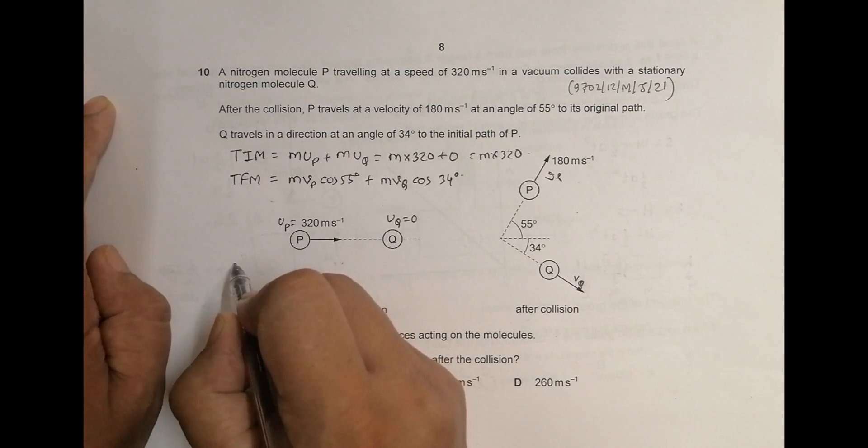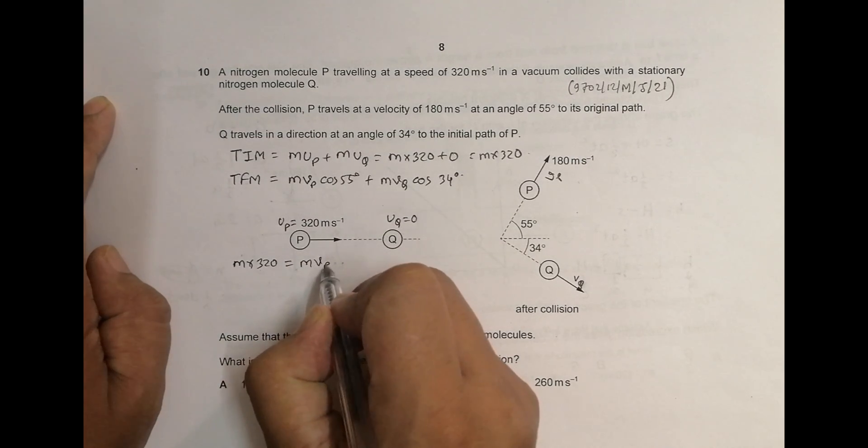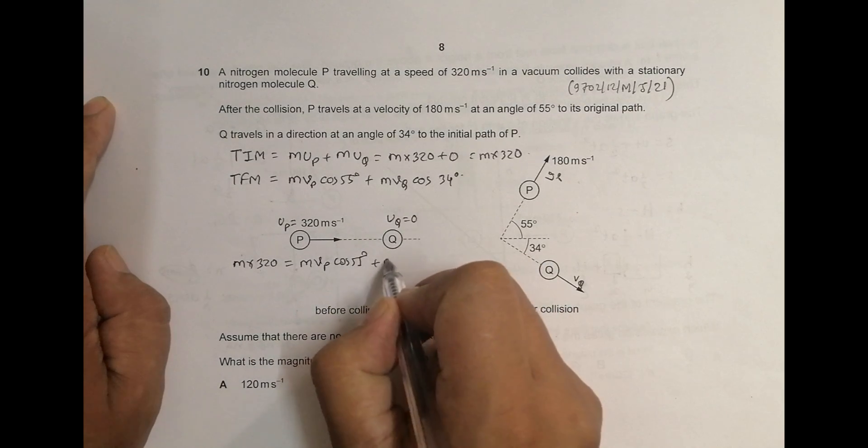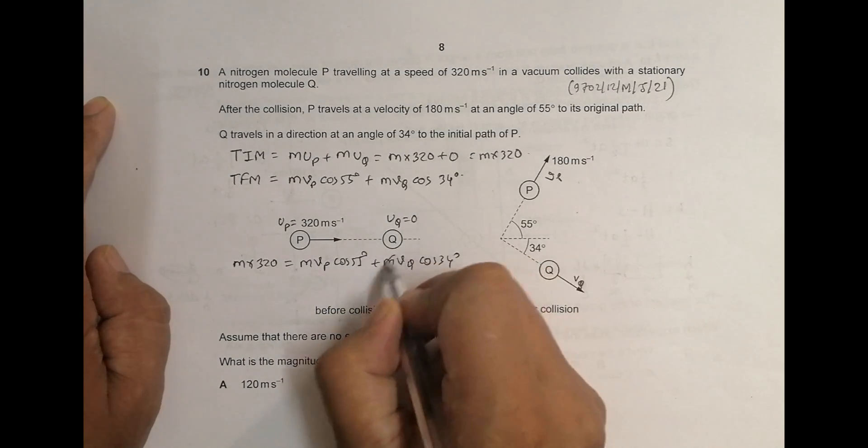we must have M into 320 should be equal to M V P cos of 55 degree plus M V Q cos of 34 degree. So this M, M, M goes,